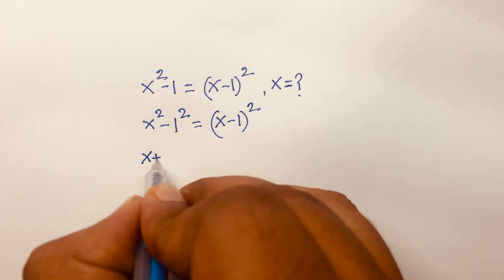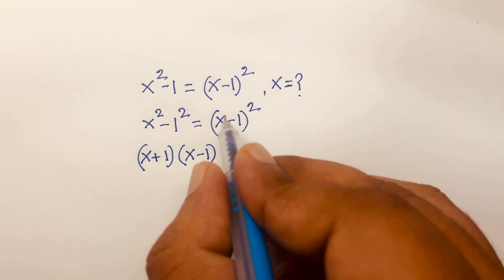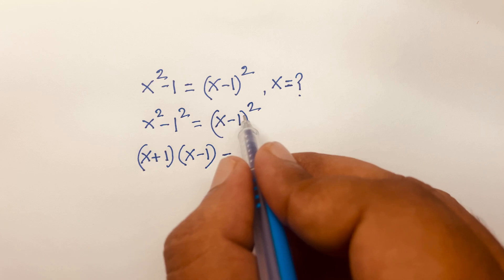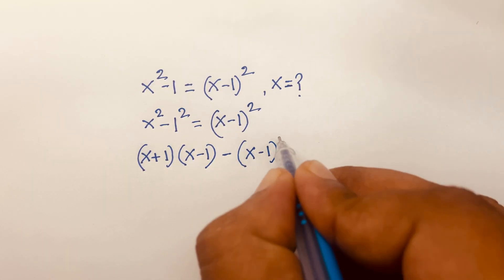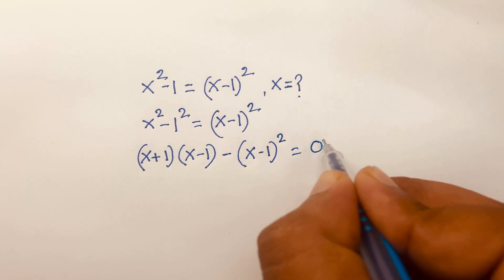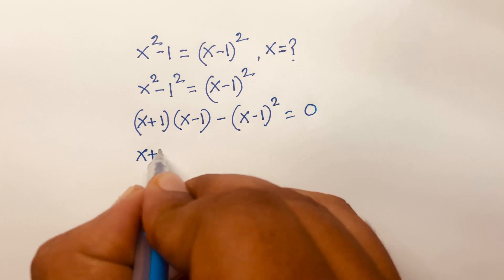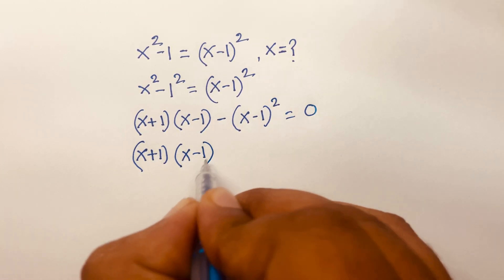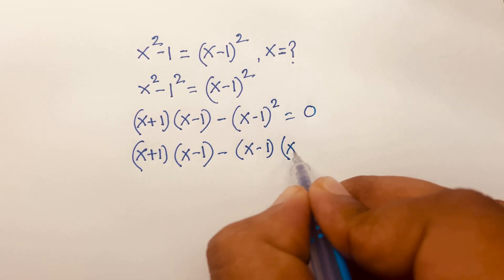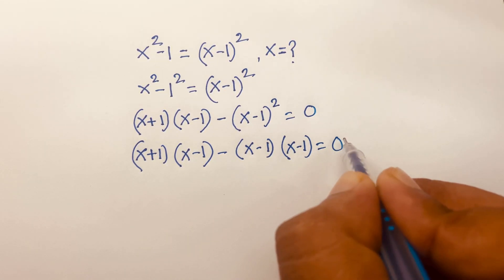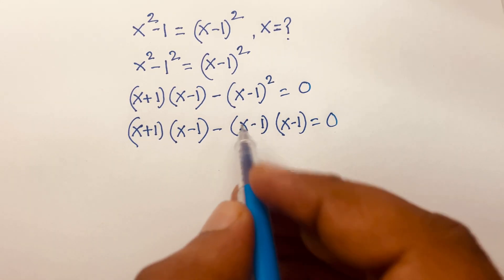So it will be (x+1)(x-1), and moving (x-1)² to the left side, we get (x+1)(x-1) minus (x-1)² equals 0.